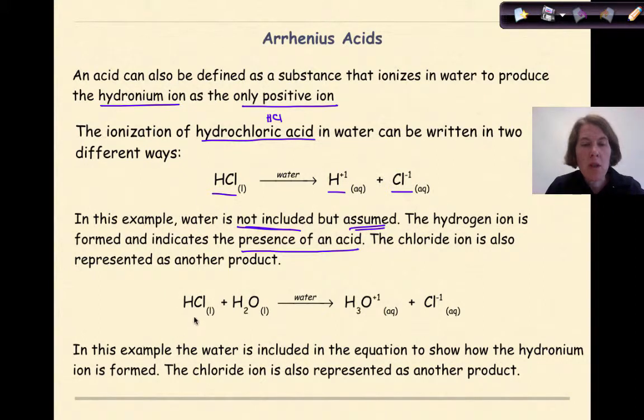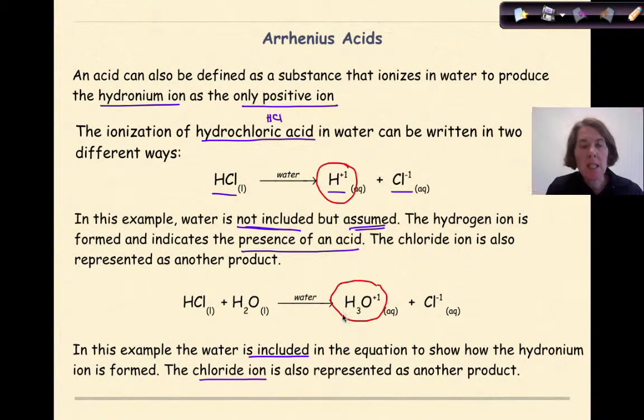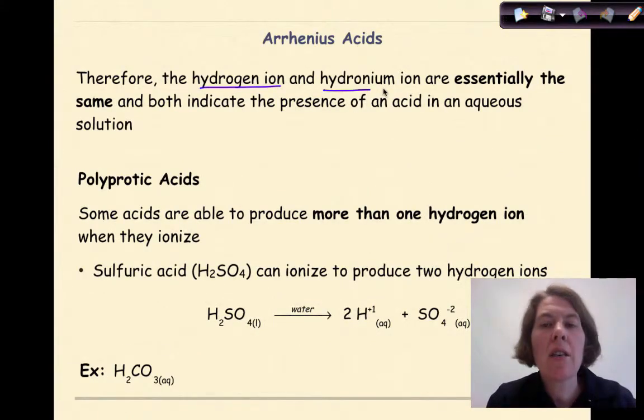Then we have this situation. HCl liquid plus water, we form the hydronium ion and the chloride ion. In this example, the water is included in the equation to show how the hydronium ion is formed. The big thing to realize is that both of these are considered acidic solutions. Whether we see the presence of the hydrogen ion or the hydronium ion as a product, both situations indicate it is acidic. Therefore, the hydrogen ion and the hydronium ion are essentially the same and both indicate the presence of an acid in an aqueous solution.